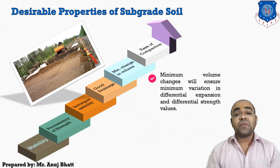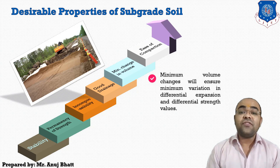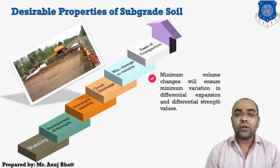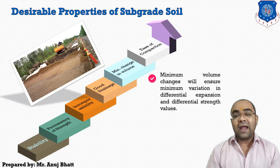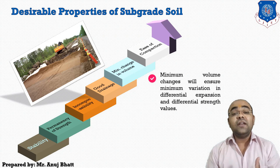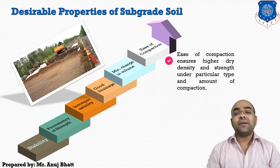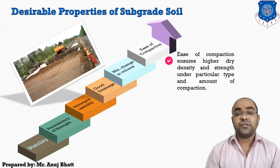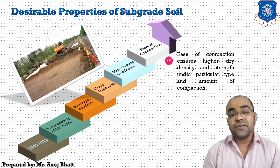After good drainage, the next property is minimum volume changes. Minimum volume changes ensure minimum variation in differential expansion and differential strength values. Expansive soils — such as black cotton soil — used as subgrade material are very poor, as these soils are expansive in nature. Such soils should be removed by excavation and replaced with granular soil, which will give better strength and also have the minimum volume change property. The next desirable property is ease of compaction, which ensures higher dry density and strength under a particular time and amount of compaction. Granular soils can be compacted easily, giving higher dry density and strength.